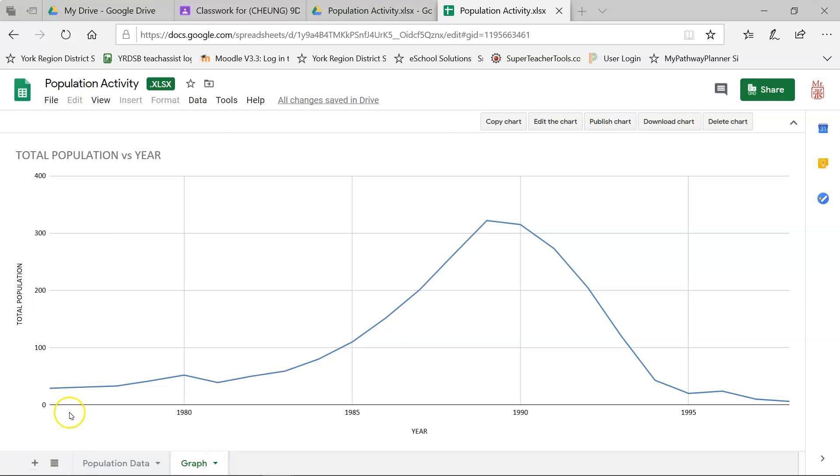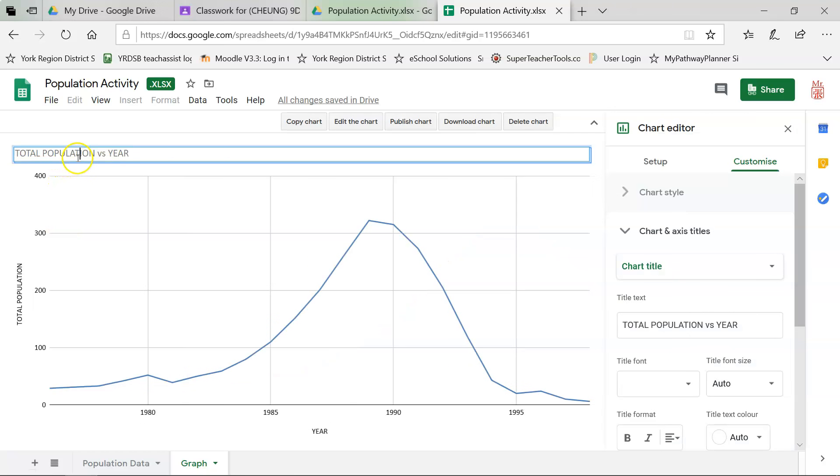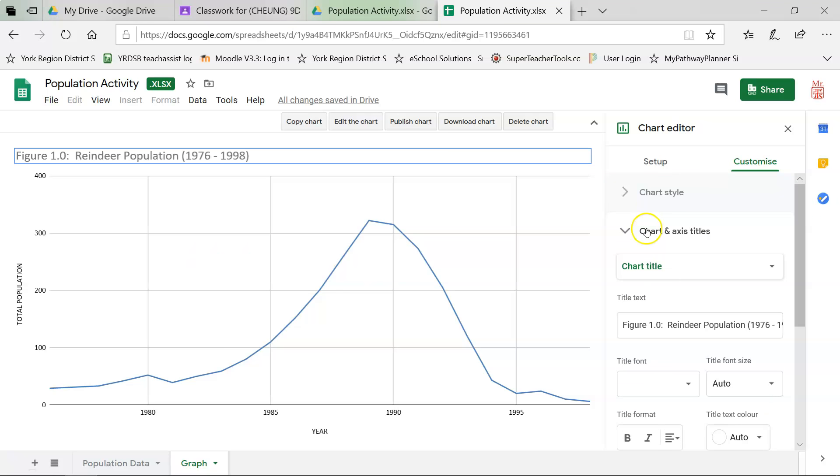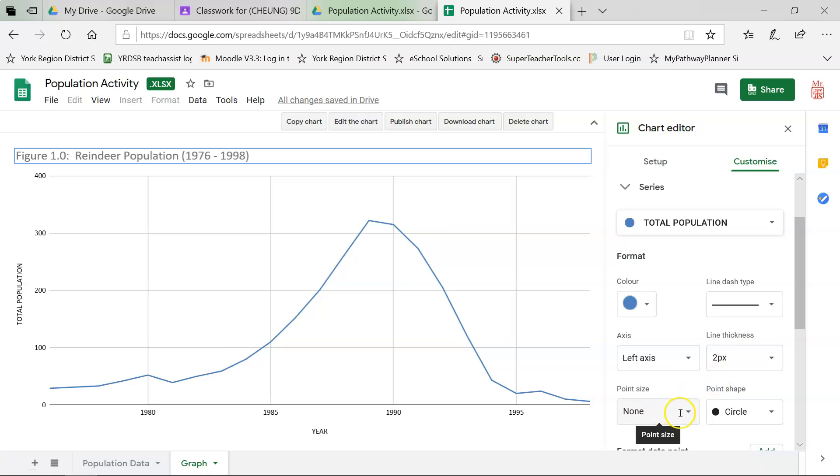Now the next thing we want to do is clean it up. I want to change this title. Let's call it figure 1.0 reindeer population from 1976 to 1998. Now the next thing I want to do is to show the data points on the graph itself. So I'm going to go over to the settings over here and choose series. Once I click on series, I'm going to say point size. Let's make it seven pixels. And there are my dots for each of my data points. Makes it easier for me to identify what year was what and when did things happen.